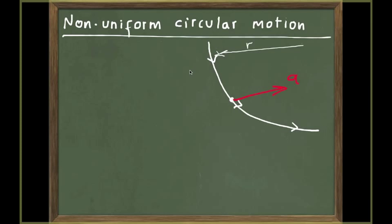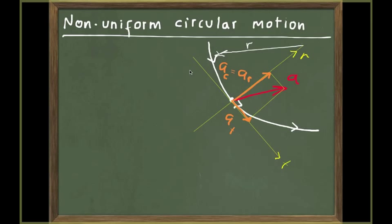At some point, the object is going to have some acceleration A that points in some direction. At that point we could choose our coordinate axes to be T for tangential — an axis tangential to the trajectory at that point where the object is — and the radial direction, which is the axis that points towards the center of the path, the center of the circle. If we choose our coordinate axes that way, then the acceleration vector will have two components: the tangential component and the radial component, tangential along the T-axis and radial along the R-axis.